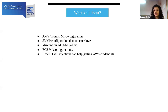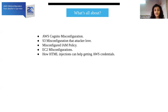So what are we covering today? I will be discussing AWS Cognito misconfiguration, S3 misconfiguration, misconfigured IAM policy, and EC2 misconfiguration. We'll also talk about how you can use HTML injection vulnerability to get AWS temporary credentials. I'll be covering the approach, not step-by-step procedure, since I have to cover everything within 25 minutes.